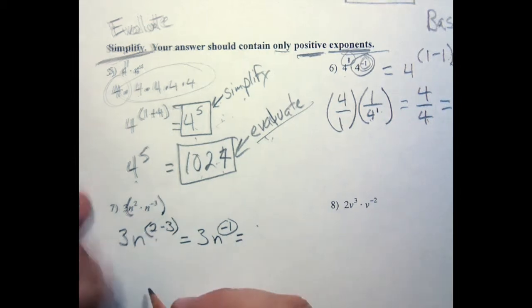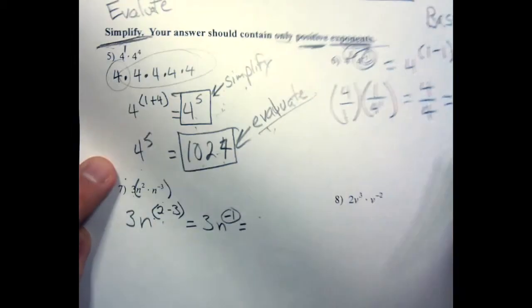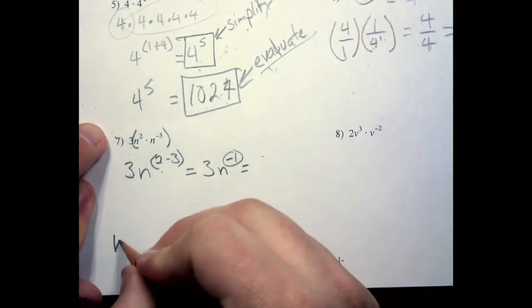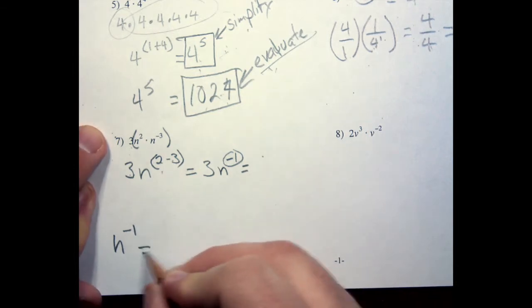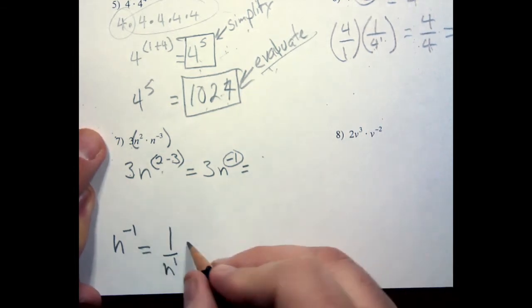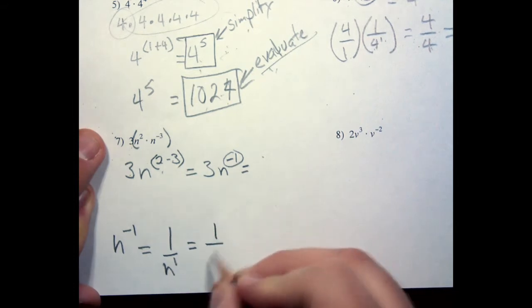In other words, on a little bit of a side note here, n to the negative 1 is equal to 1 over n to the positive 1, which is equal to 1 over n.